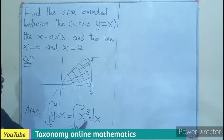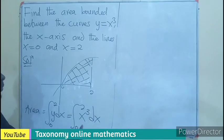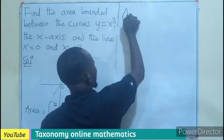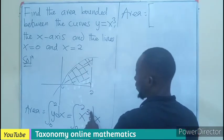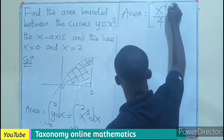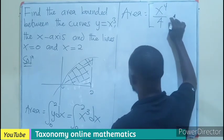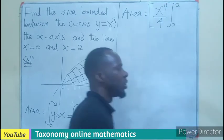Now we integrate by increasing the power by 1, dividing by the same power. So the area will be x to the power 4 divided by 4. No constant because this is a definite integral. Then the limits of integration will be introduced.